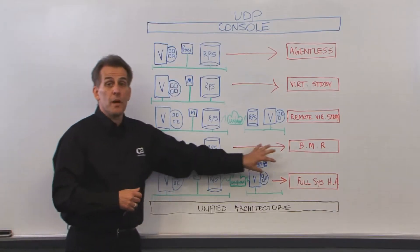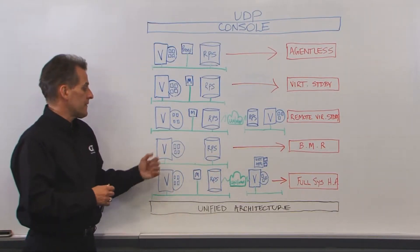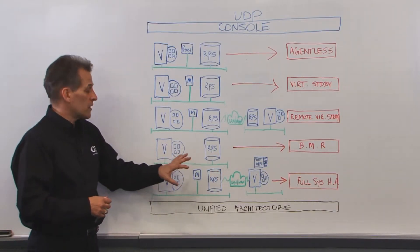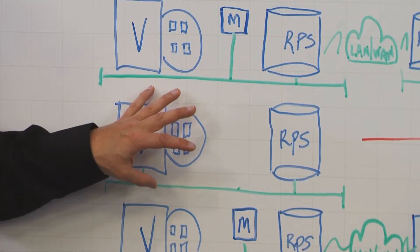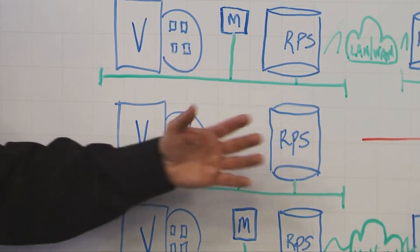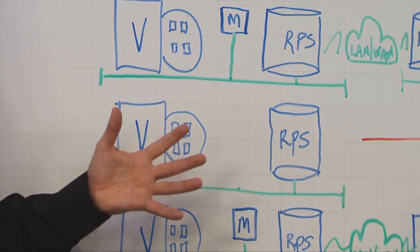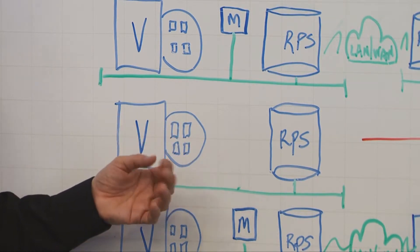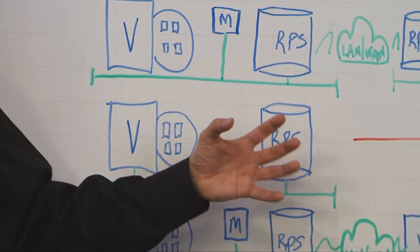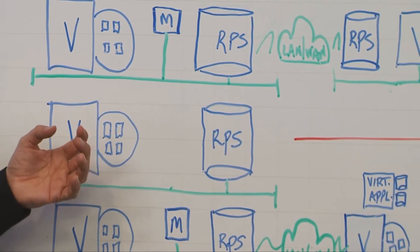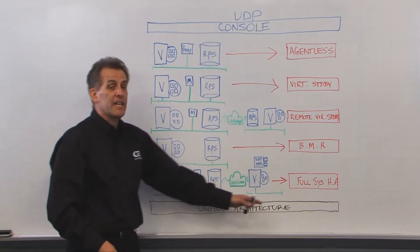Another component is bare metal recovery. Very similar again — the virtual machine backup is stored in the recovery point server. If this virtual machine is gone, from that last backup we build a complete recovery of the virtual machine on the fly.